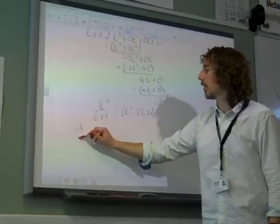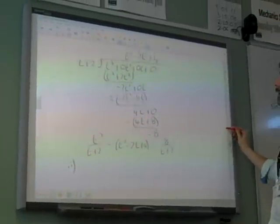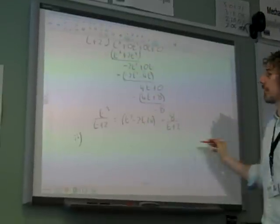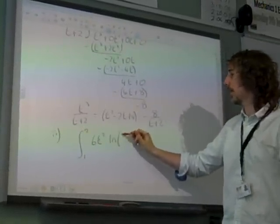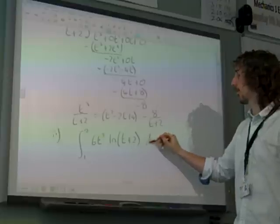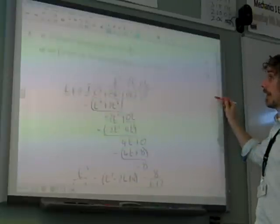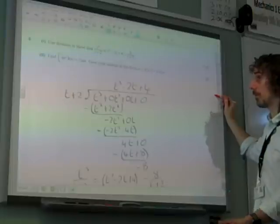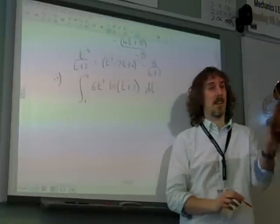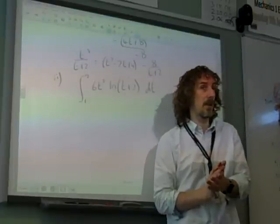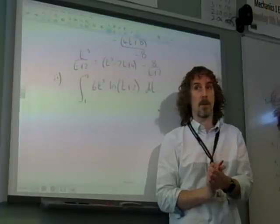Says integrate between 1 and 2, 6t squared Ln t plus 2 dt. And they do give us something in the form. Well, this is clearly an integration by parts, isn't it? And I think we all recognise it as going to be integration by parts.